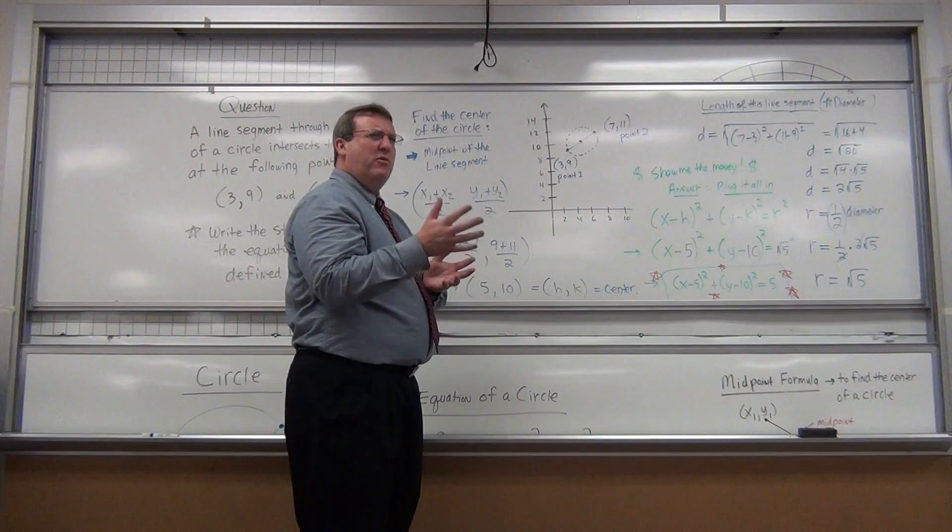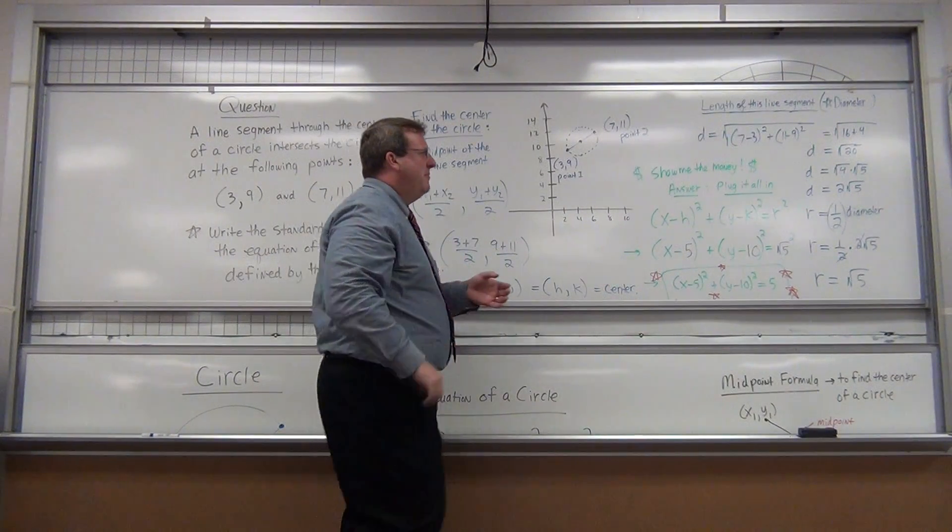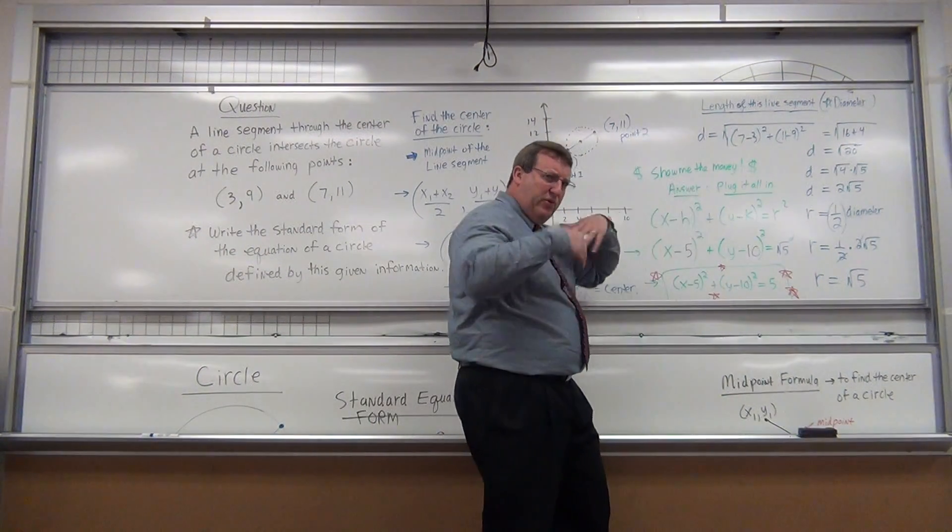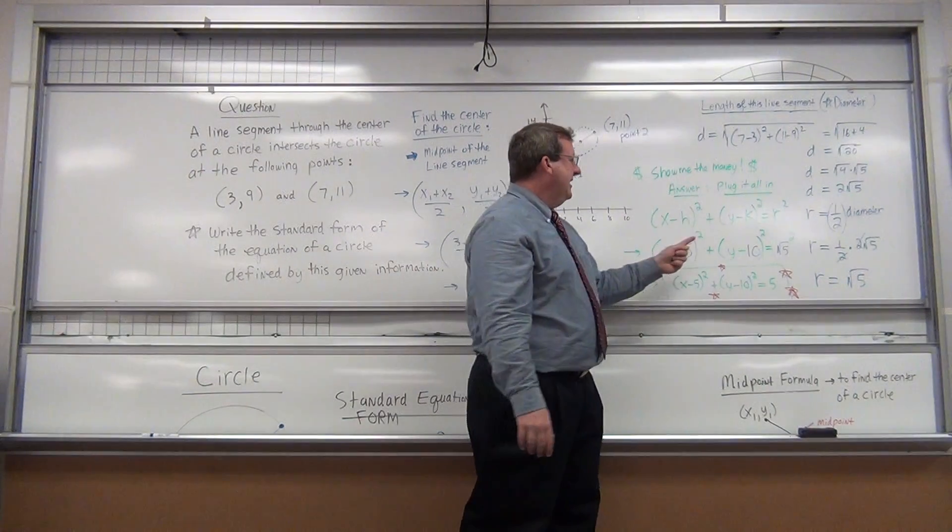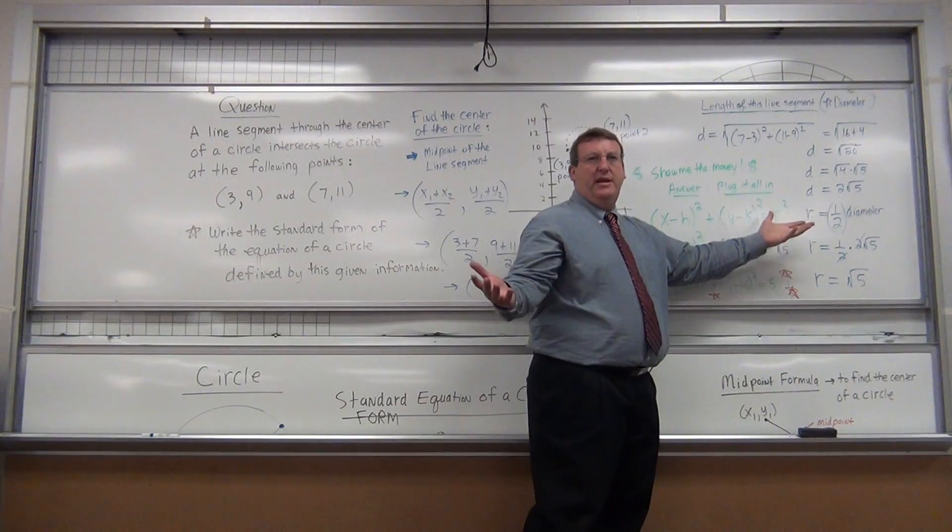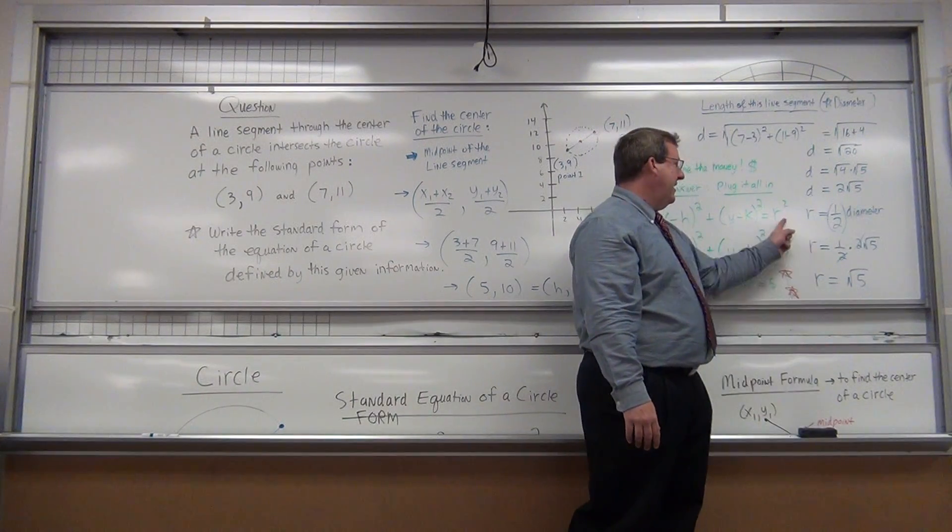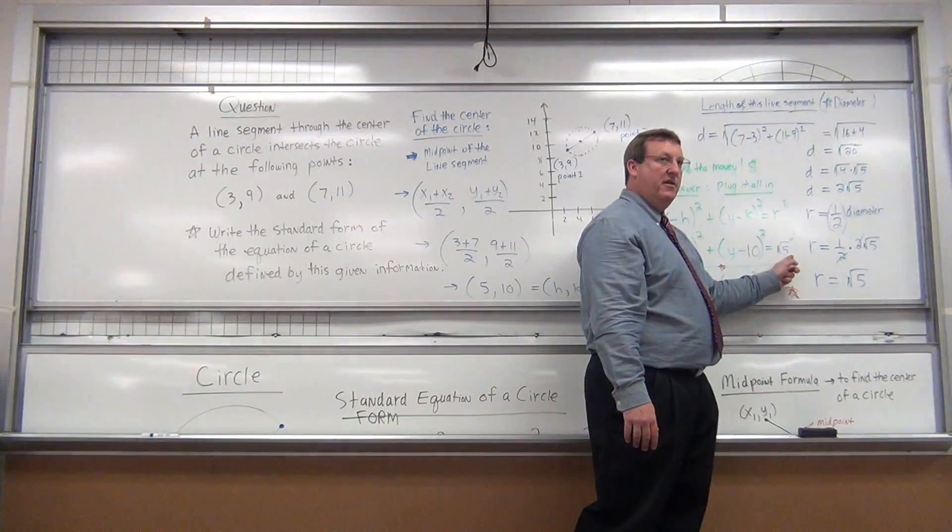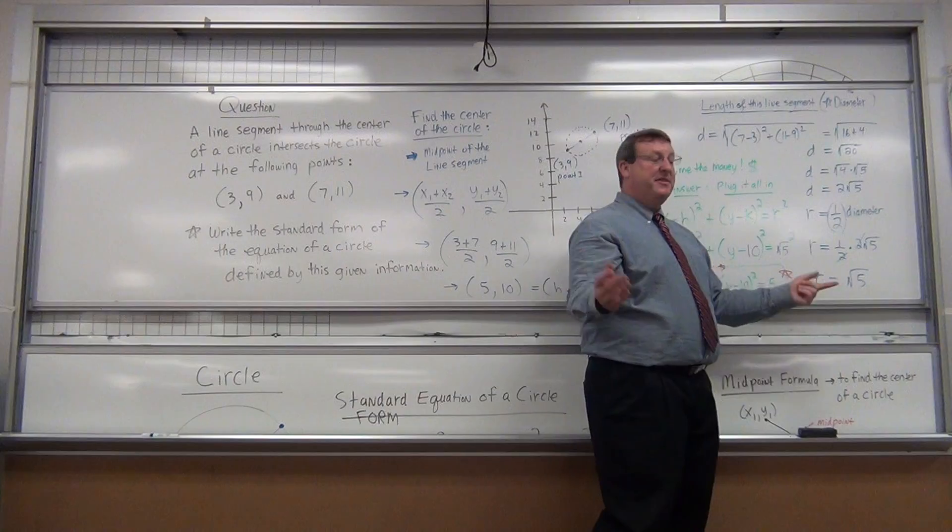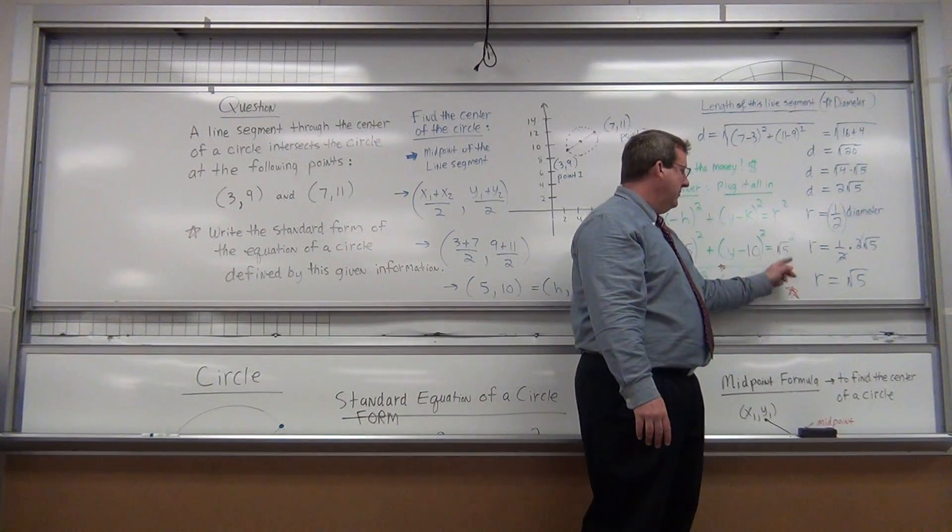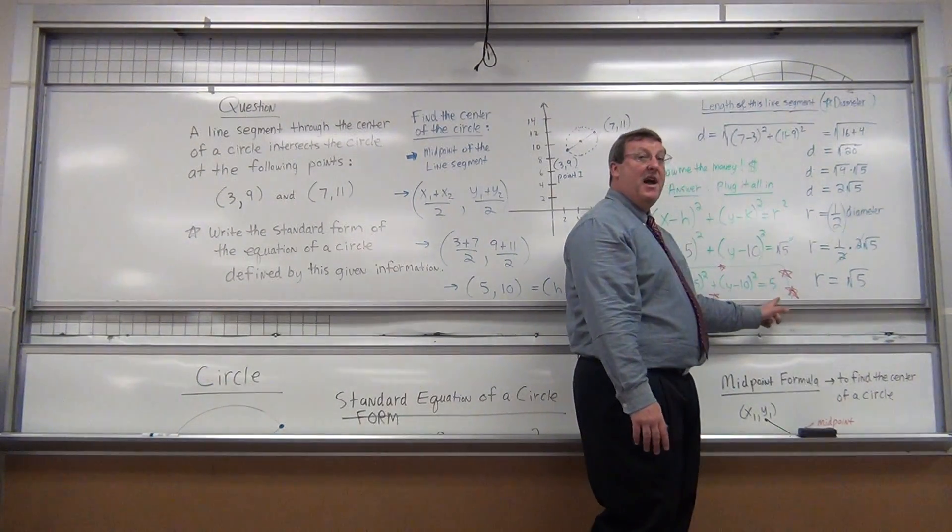Well, it turns out it works out okay in this question, because you remember the show me the money. Let's put it all together and get this answer. Didn't the formula have radius squared anyways? Well, if your radius is √5, what is radius squared? It's (√5)². Now, it becomes nice. What happens when you square a square root? It goes away. So that's where you get equals 5.